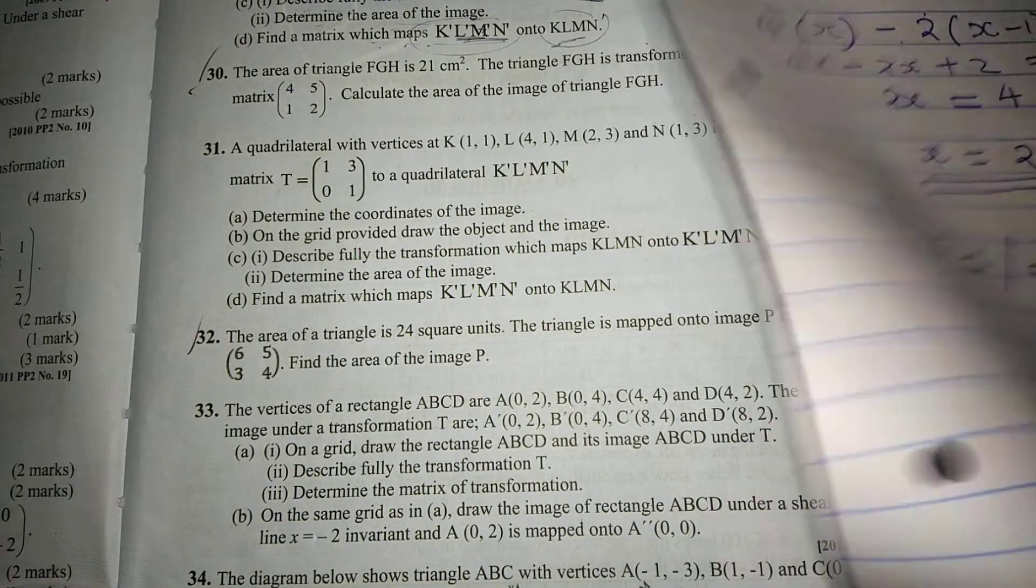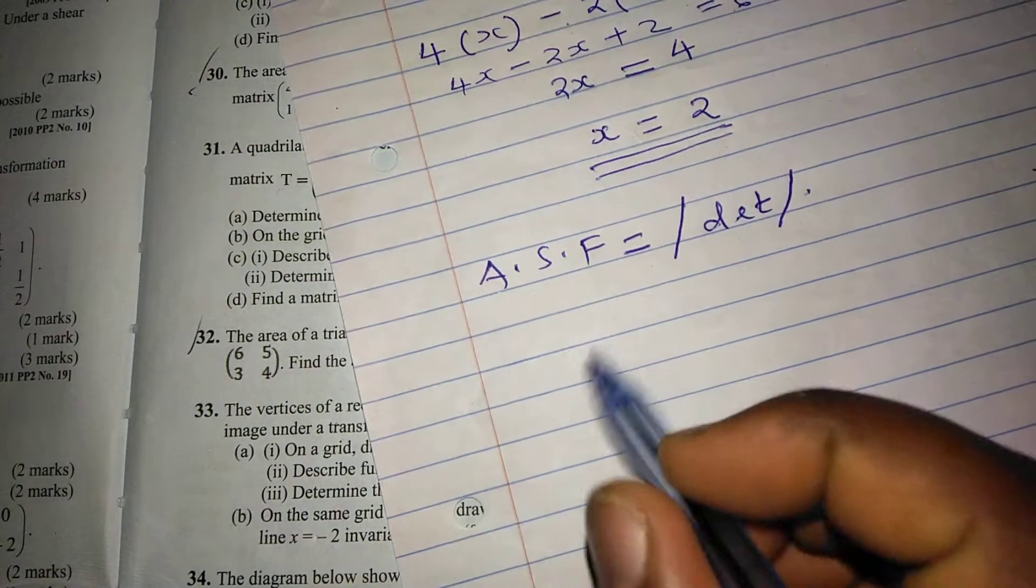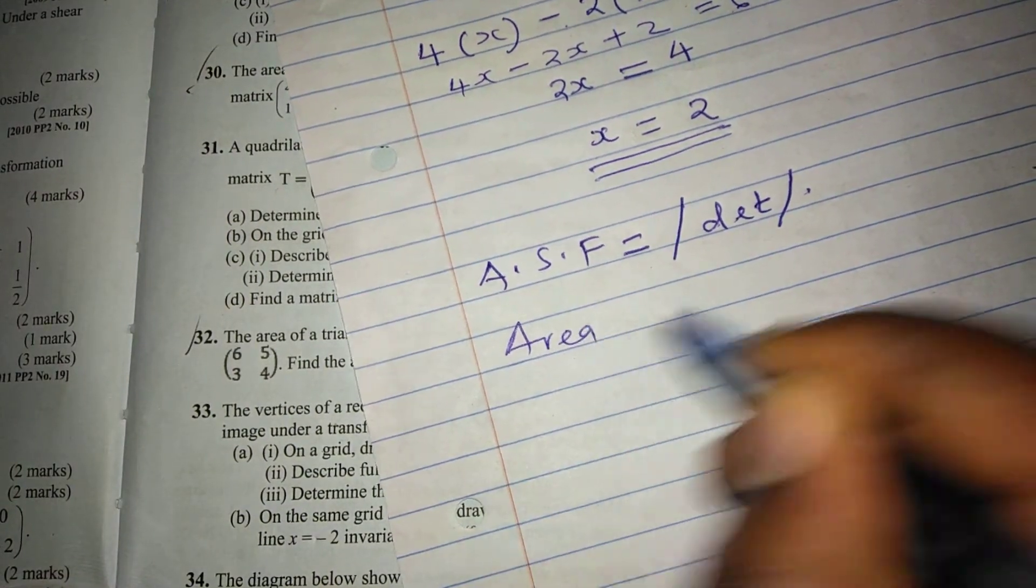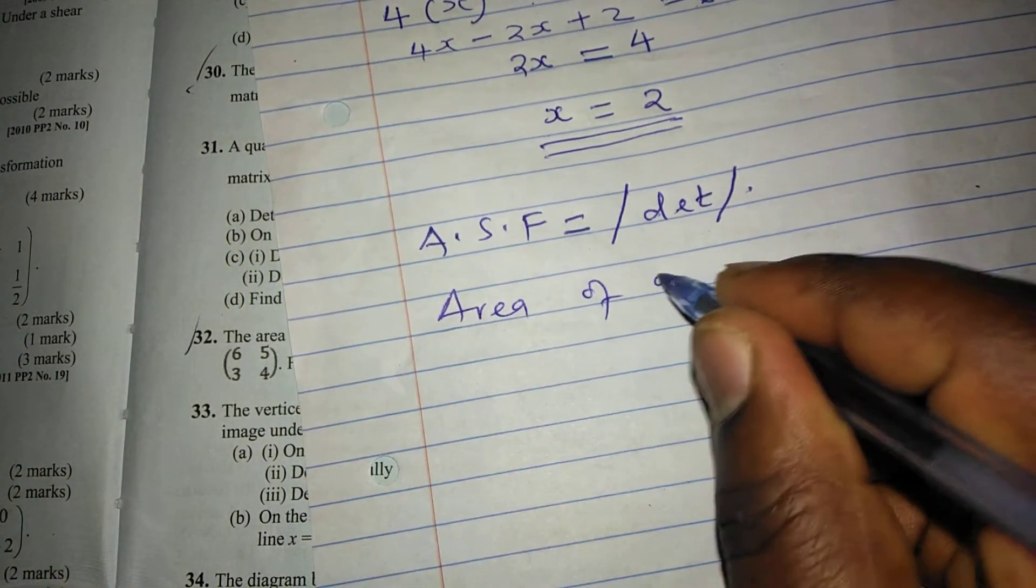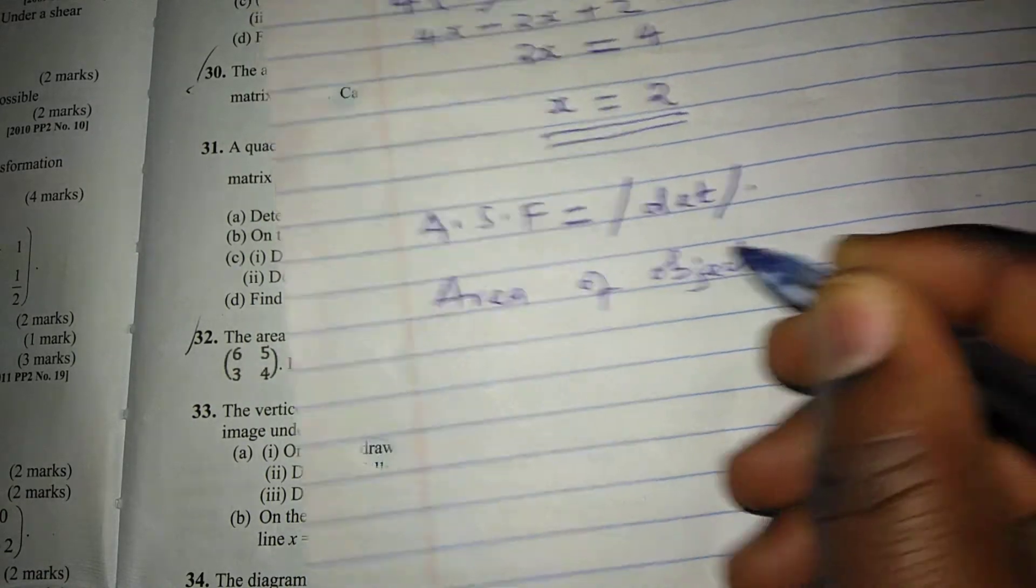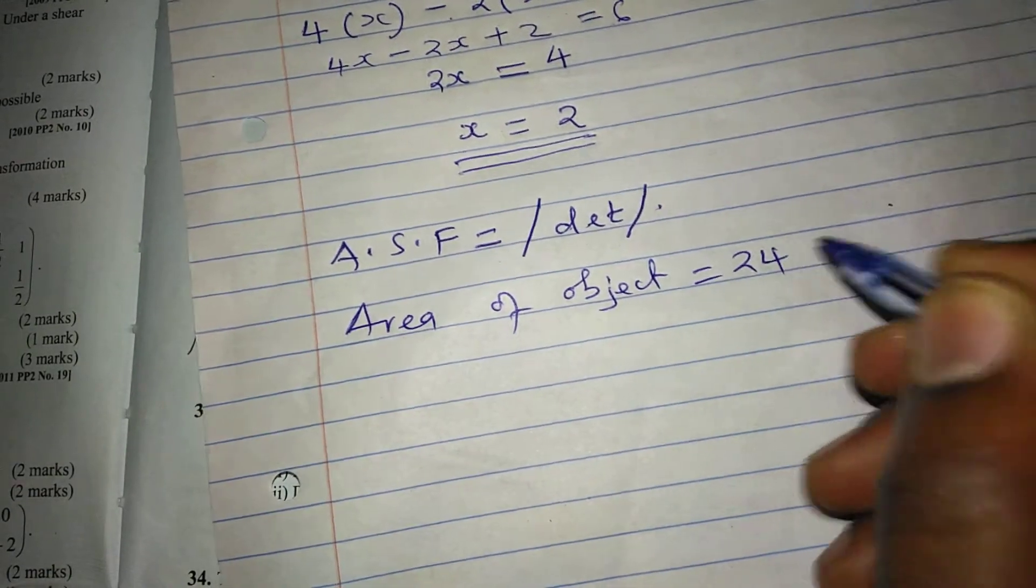So we already have area of object as 24 square units.